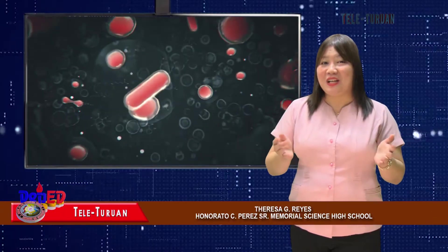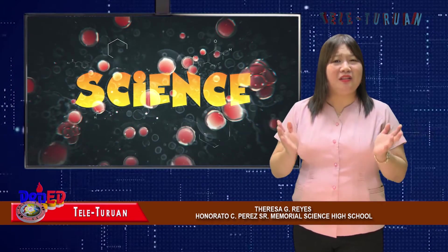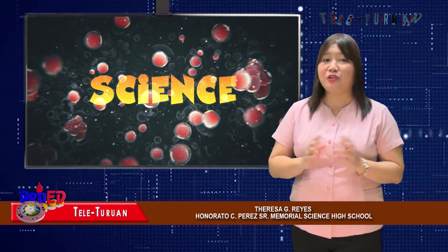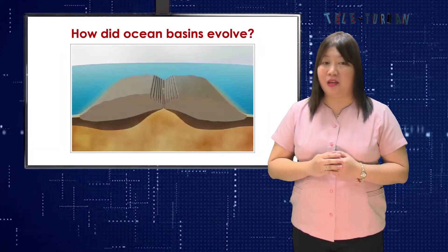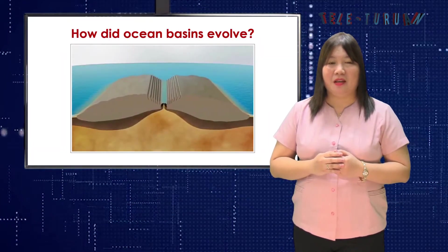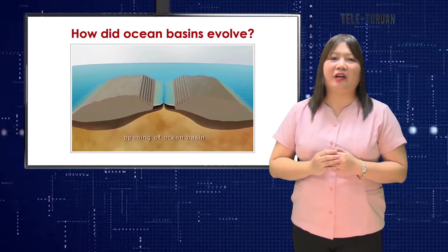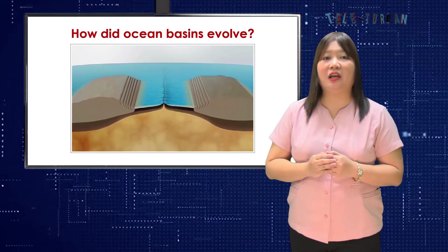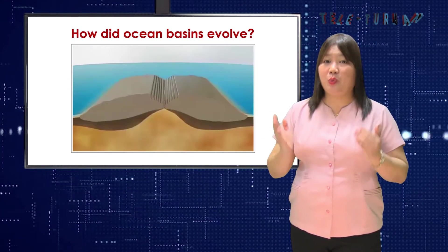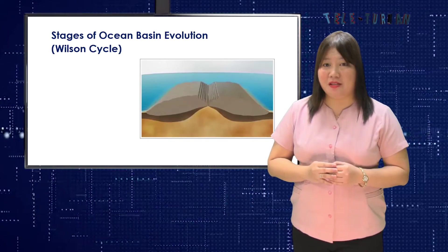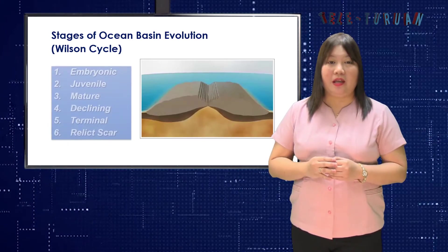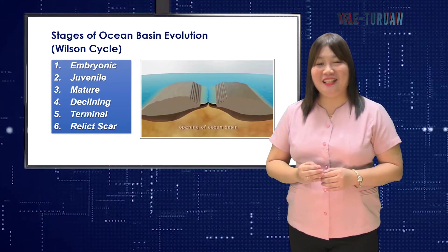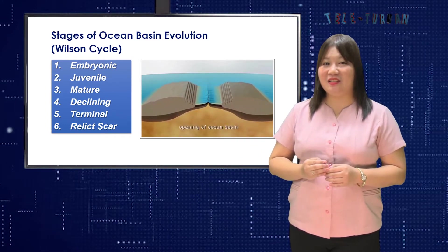Welcome back here at Deped Our Teleturuan. Knowing the structure or formation of ocean basins, the next question is: how did ocean basins evolve? Different ocean basins are geomorphologically distinct based on their stage of geological evolution according to the Wilson cycle. The stages of ocean basins' evolution include embryonic, juvenile, mature, declining, terminal, and relict scar.